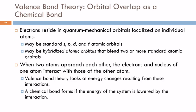So the first one is valence bond theory. Valence bond theory treats bonds as overlap of orbitals. Remember, we learned that electrons reside in quantum mechanical orbitals. Those are localized on individual atoms. So we've got the s orbitals and the p orbitals and the d, etc.